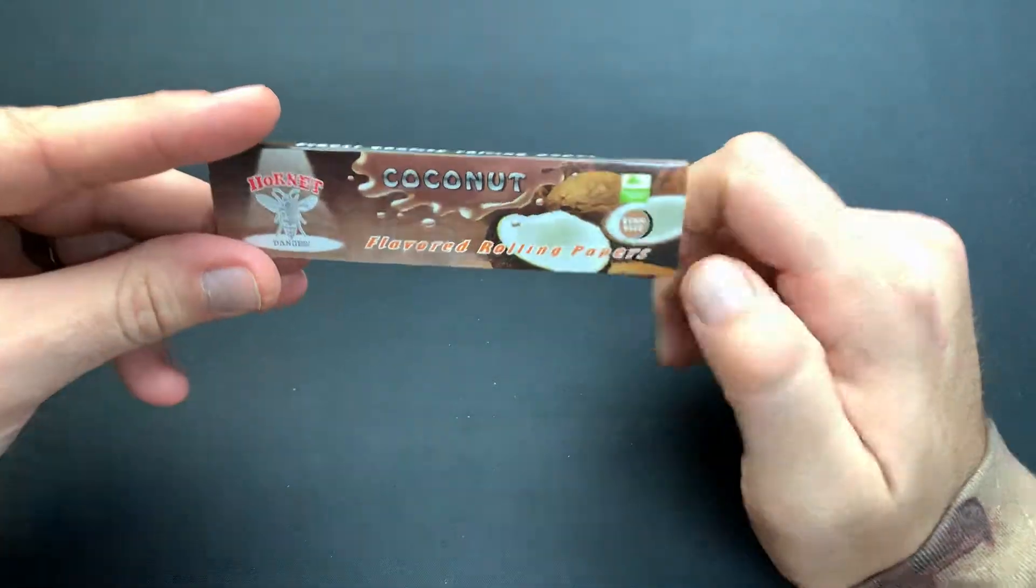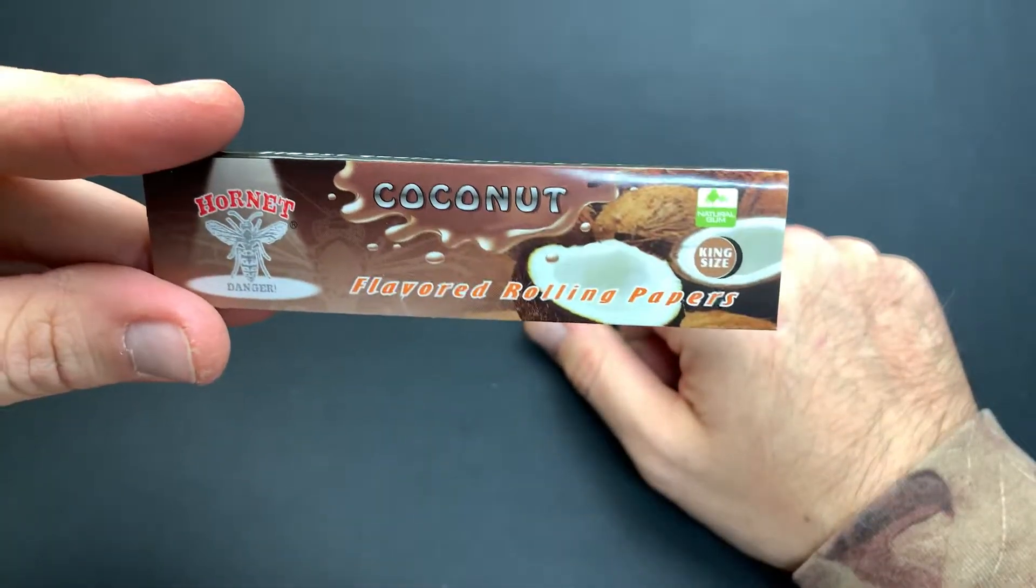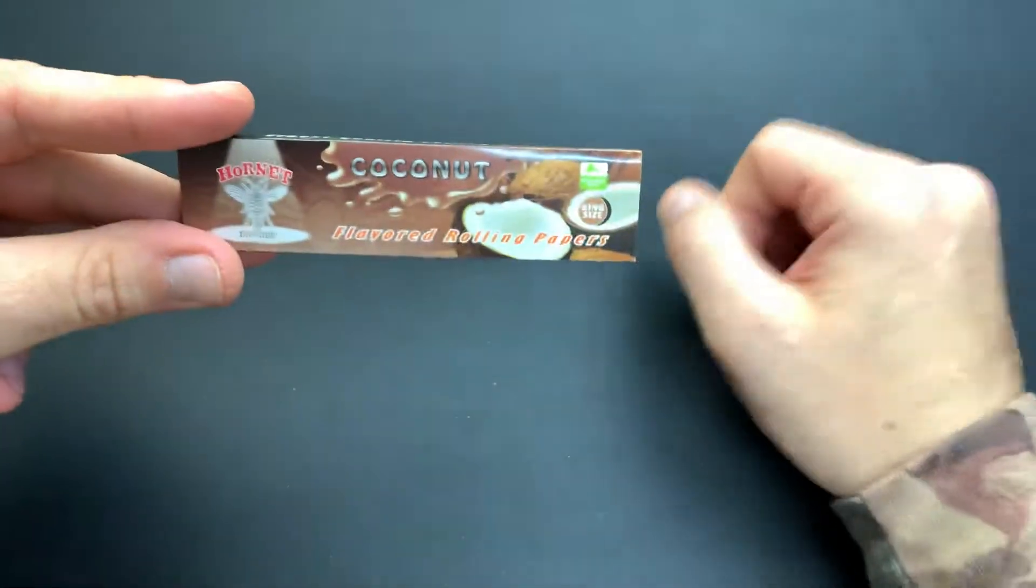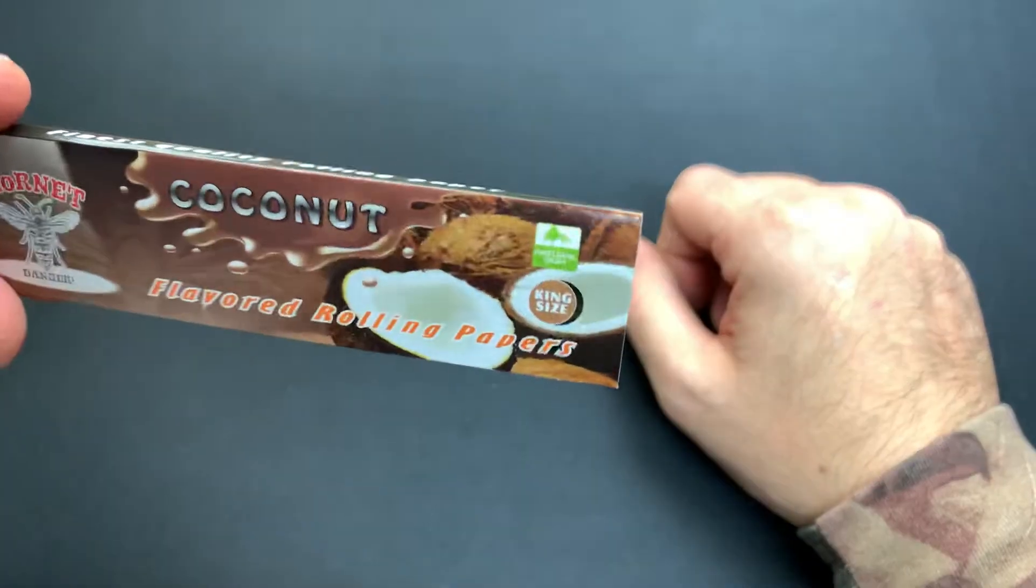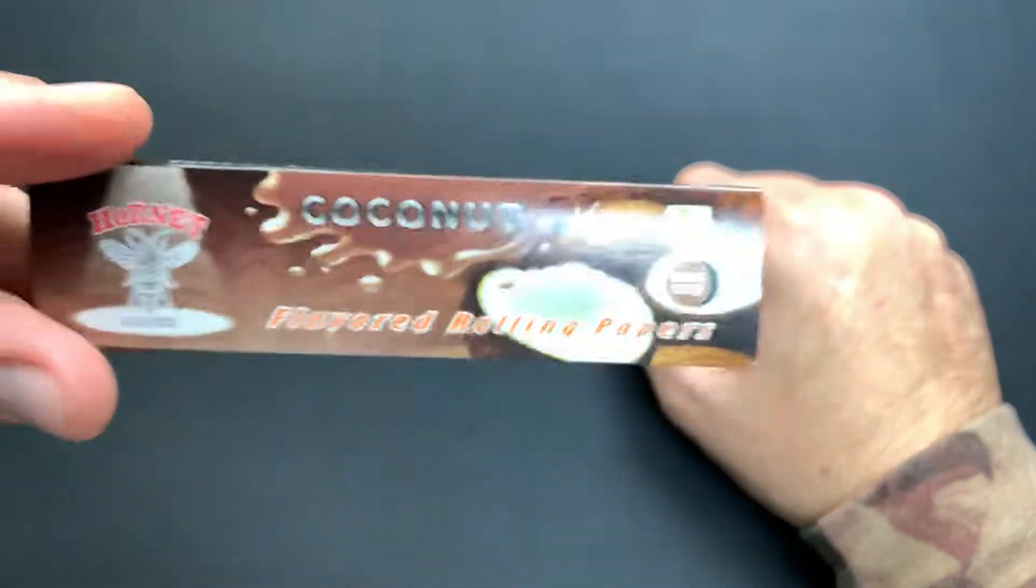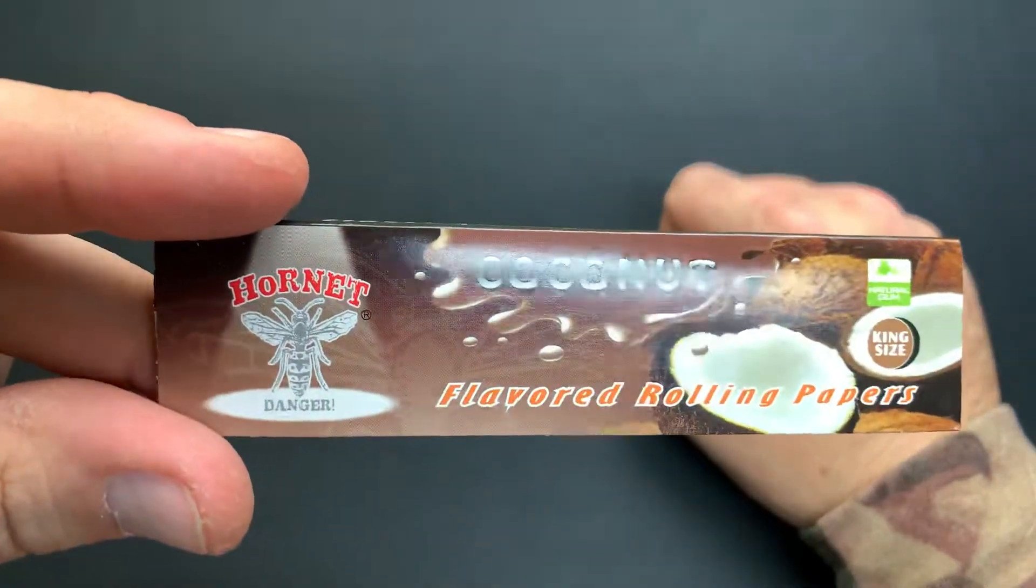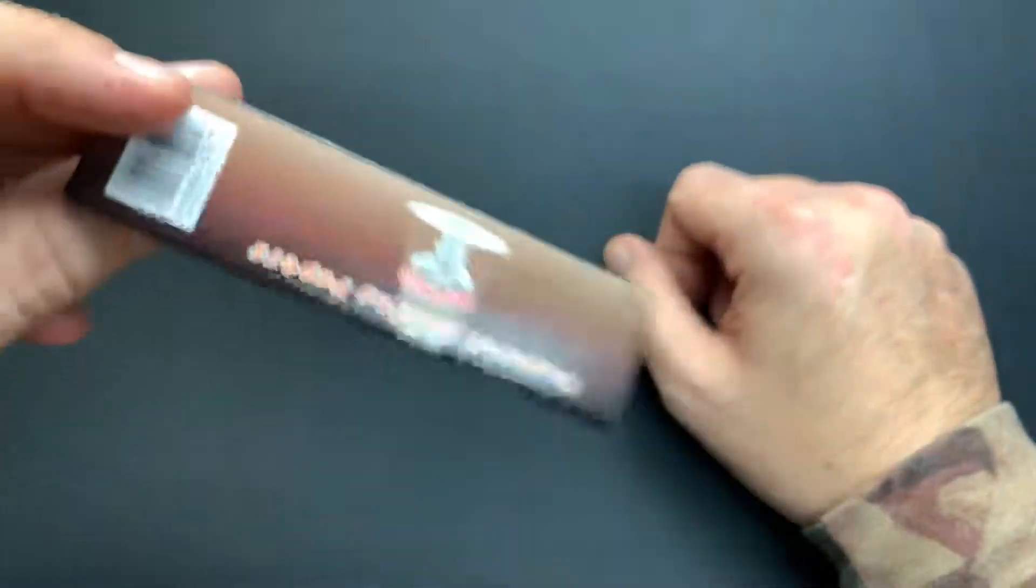So we got the nice stock photo of some coconuts split open on the front. We got a nice little brown splash where it says coconut, natural gum which we know it's not. We got king size is the size of the paper. We got Hornet danger on the front and on the back.